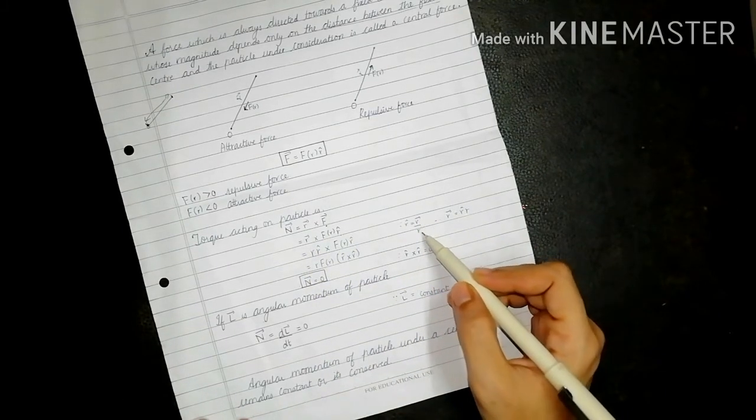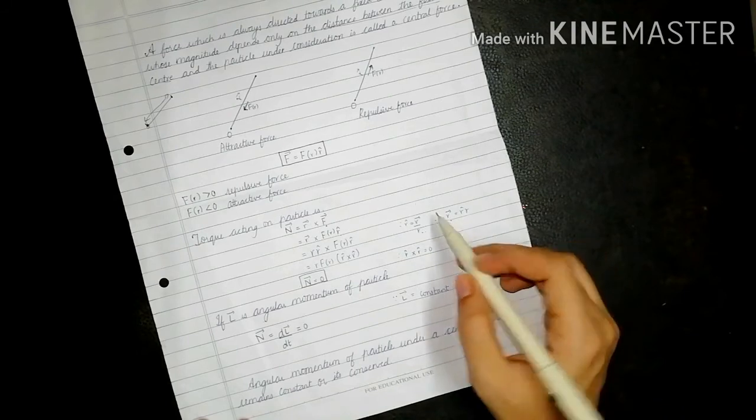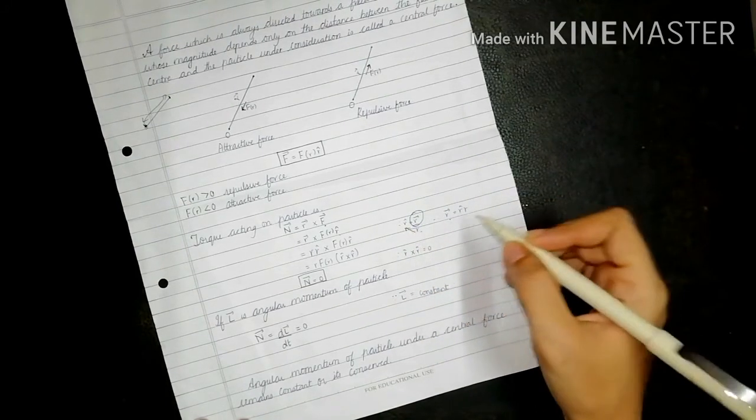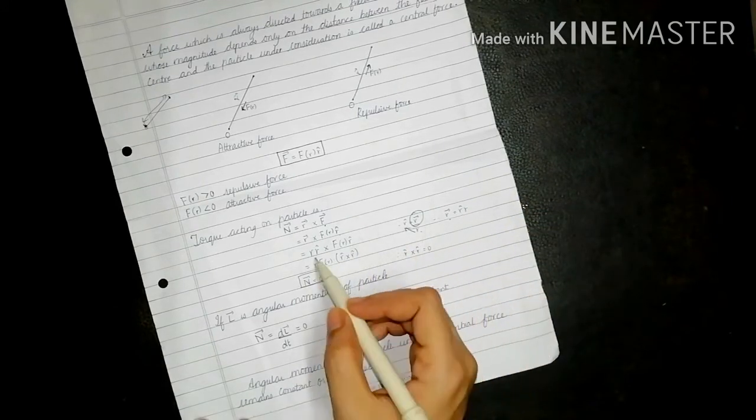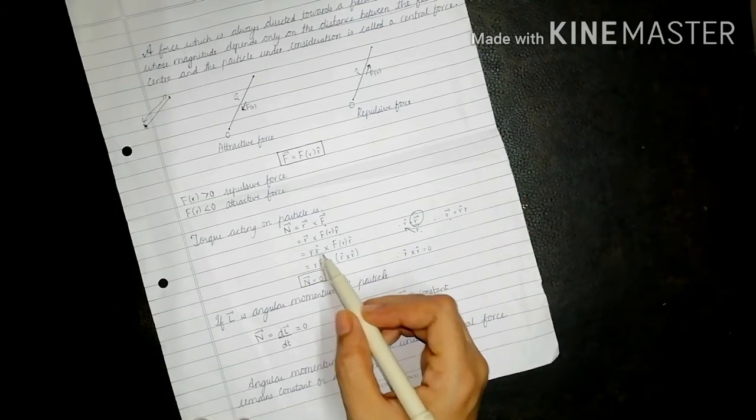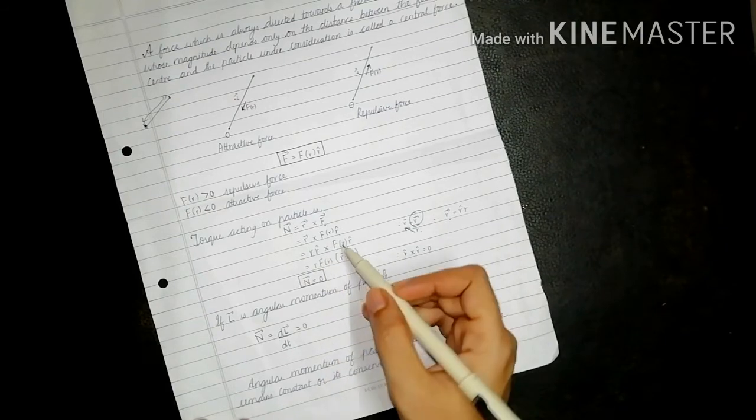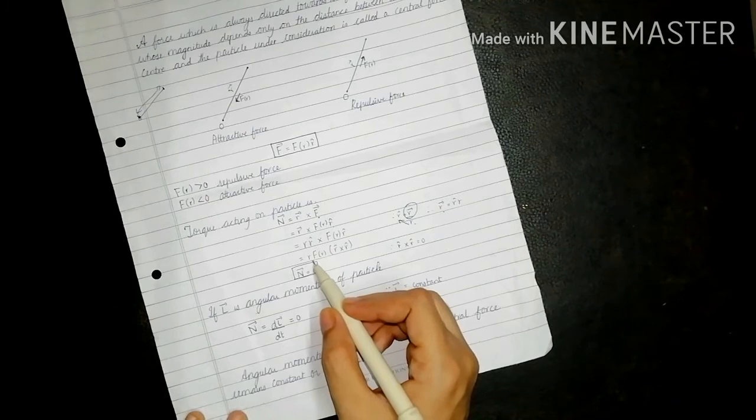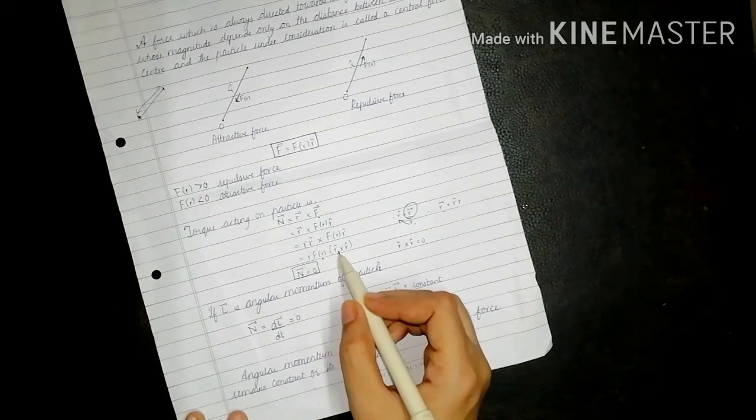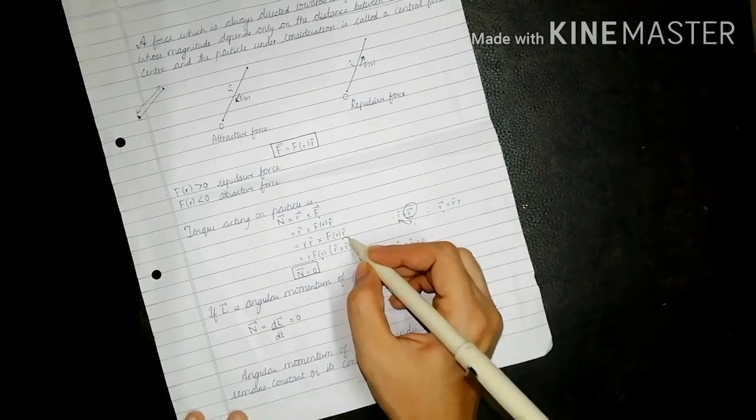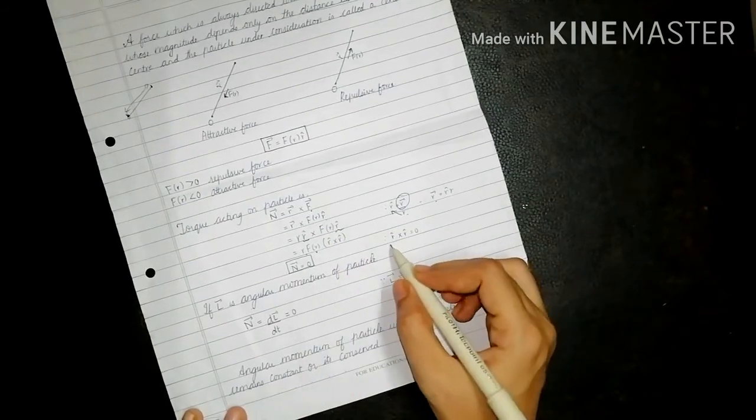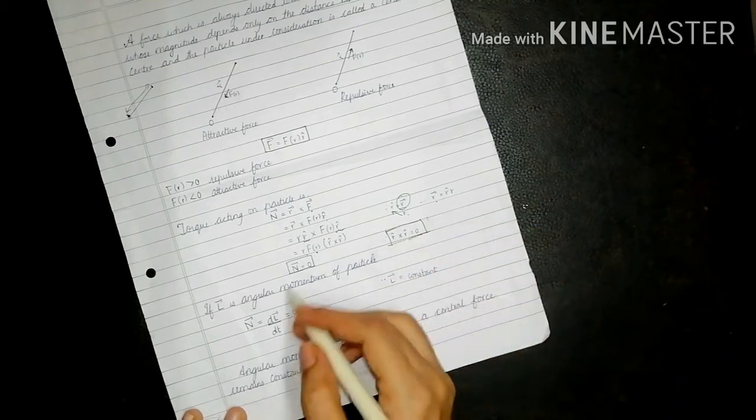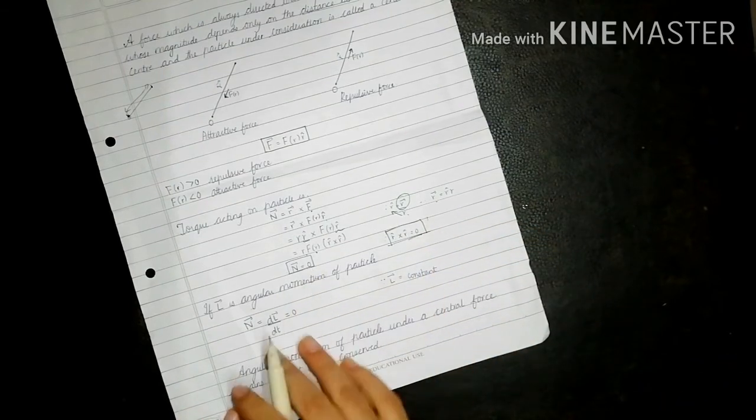So r bar could also be written as r cap into r. So r into r cap into f of r, r cap. So r f of r into r cap cross r cap. So n bar is equal to 0.